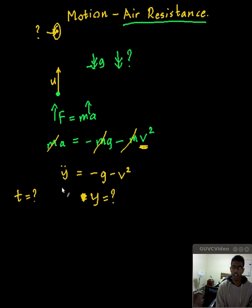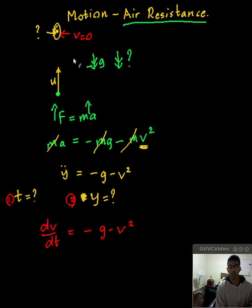In order to answer that question, to answer the first question, I'm going to write my acceleration as dv/dt equals minus g minus v squared. Before I go ahead and integrate this question, you need to remember that what the conditions are. So at the top, the velocity is equal to zero. At the top, just before it drops down, it's still, it stays there and then it drops down. At this point in time, velocity is zero.